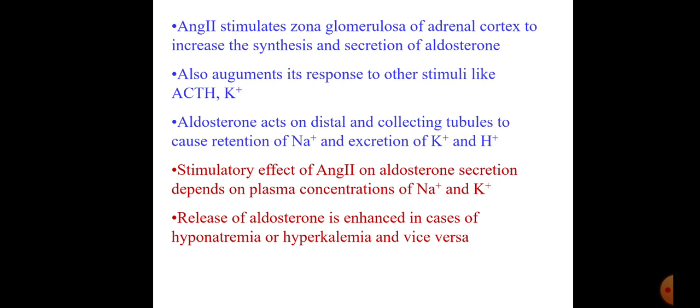Aldosterone secretion depends on plasma concentrations of sodium and potassium. When sodium concentration is low, aldosterone production is increased; when sodium is high, aldosterone production is reduced. When potassium concentration is high, aldosterone production is increased; when potassium is low, aldosterone production is decreased — because aldosterone conserves sodium in exchange for potassium. Release of aldosterone is enhanced in hyponatremia and hyperkalemia, and vice versa. Remember: angiotensin 2 increases both adrenaline release from adrenal medulla and aldosterone from adrenal cortex.